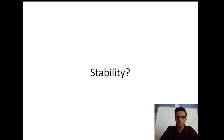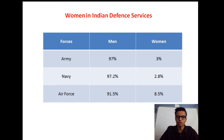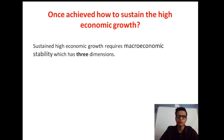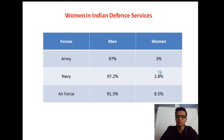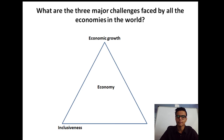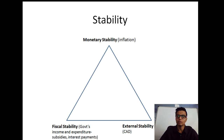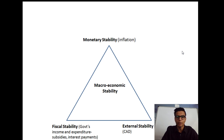So sustained high economic growth requires macroeconomic stability, which has three dimensions: monetary stability, fiscal stability, and external stability. Once you achieve all three, you have achieved macroeconomic stability. With this, we finish this topic and this session. I hope it helped you.